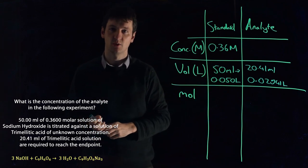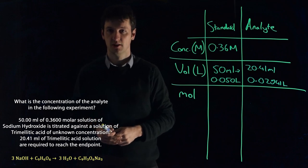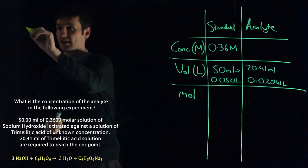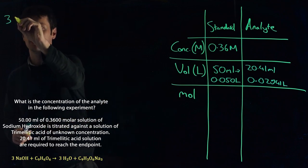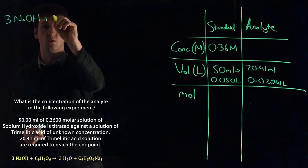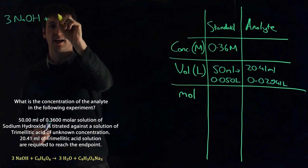The other thing that we need to know is, what is the reaction ratio? So how many react with how many? Well, we're told in the question that three sodium hydroxides react with one trimellitic acid.